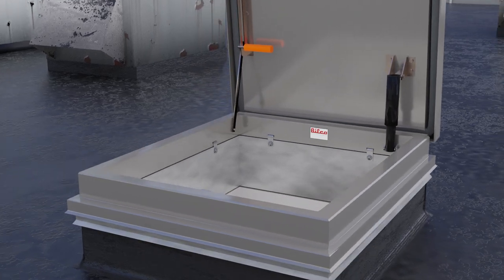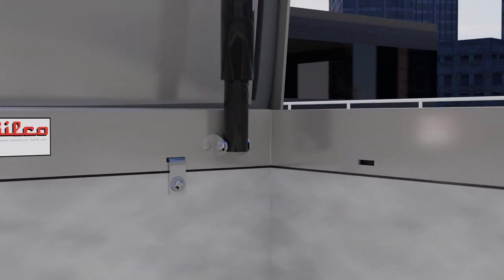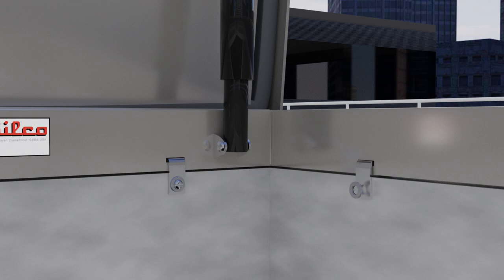Insert stainless steel anchor clips provided into the slots of the Versamount curb on all sides, and then secure to the existing roof hatch curb using the stainless steel screws provided. It's that easy!